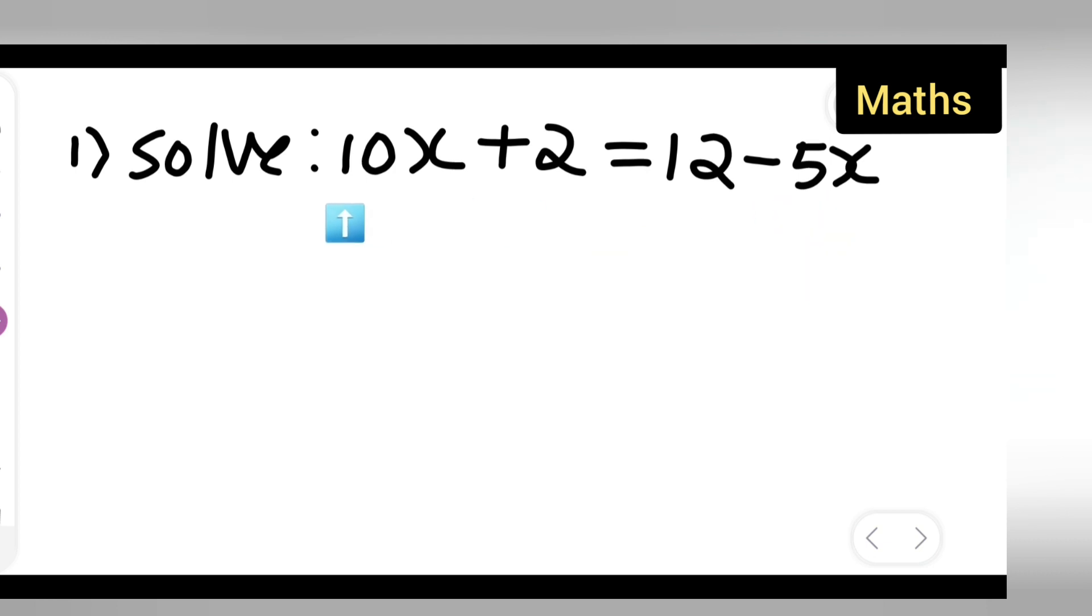So first keep the variable on one side. Variable terms are 10x and minus 5x. Now constants are 12 and 2. So keep the variable one side, keep the constant other side.